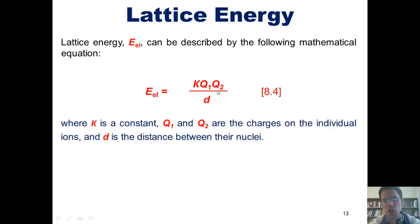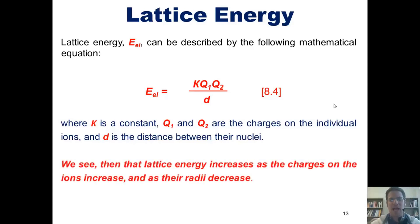And if I decrease the charges, Q1 and Q2, it will decrease the lattice energy. Thus, we can see that the lattice energy increases as the charges on the ions increase and as their radii, or bonding distance, decreases. Now, that should make sense logically if you think about it. And now, we'll go and reanalyze what we saw on the previous table.